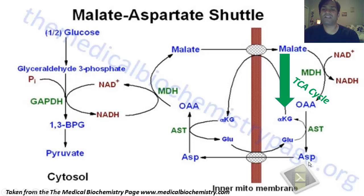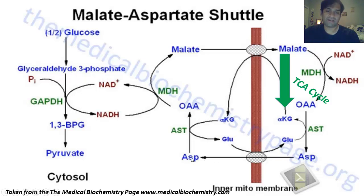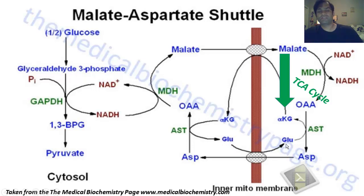That aspartate actually traverses from the inner mitochondrial membrane through the outer mitochondrial membrane to the cytoplasm. Notice that we have an antiporter here — aspartate comes out from the matrix through the outer mitochondrial membrane into the cytoplasmic pool. And along with it, glutamate comes in an antiporter manner towards the mitochondrial matrix from the cytoplasm.